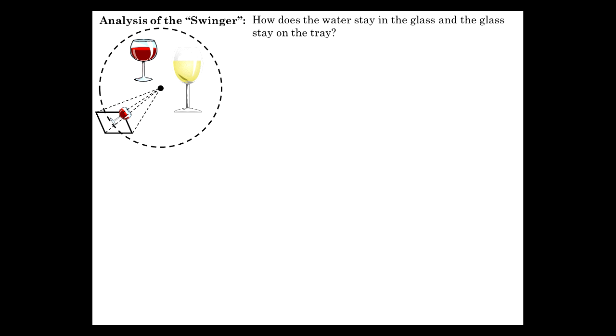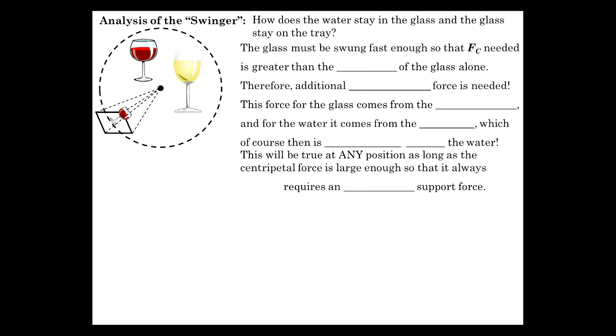So how does the water stay in the glass, and the glass stay on the tray? How does that all work? Well, it's a condition of too fast. And you know about the too fast situation. If you go too slow, it'll fall off. Just right? Possibly. But you really want to be too fast.